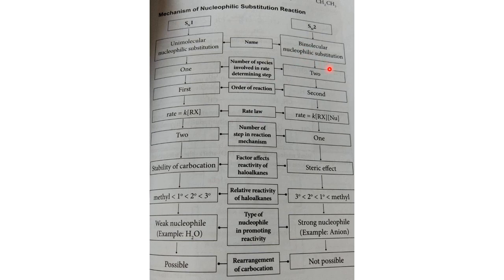SN2 involves one step and is a second-order reaction because the rate depends on both the haloalkane and the nucleophile. Only one step mechanism — we must consider steric effect. SN2 prefers methyl or primary haloalkane and normally uses strong nucleophiles such as CN⁻, methoxide, or hydroxide. Rearrangement is not possible because it is only one step.